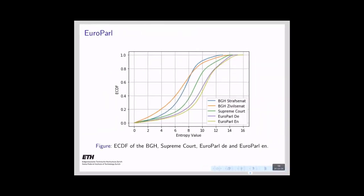We used the Europarl corpus in German and English — the same text translated — as a comparison baseline. We also calculated empirical cumulative distribution functions for this corpus and compared it. Our hypothesis was that legal writing should have less entropy than political writing. The Europarl curves are quite similar and are indistinguishable by the Kolmogorov-Smirnov test, and they are below all curves of the BGH and Supreme Court, confirming our hypothesis.